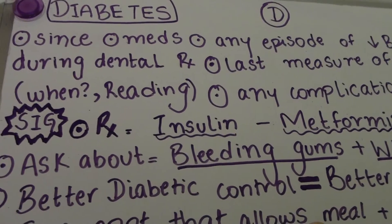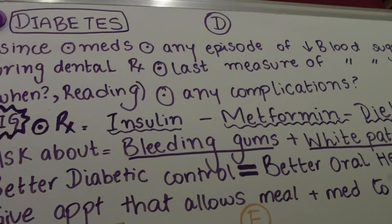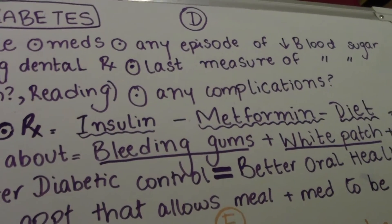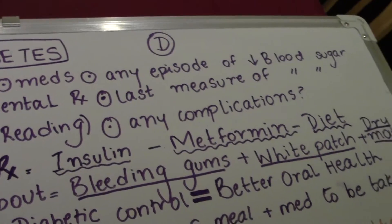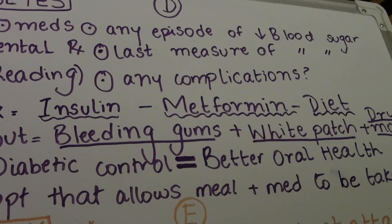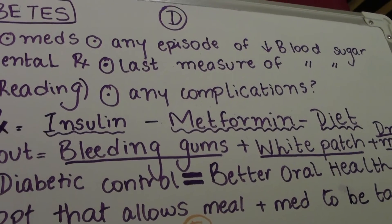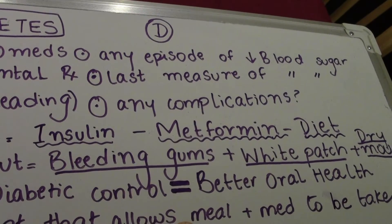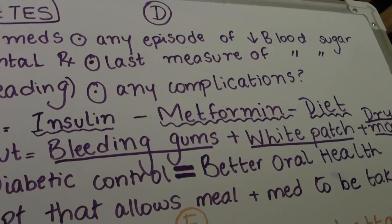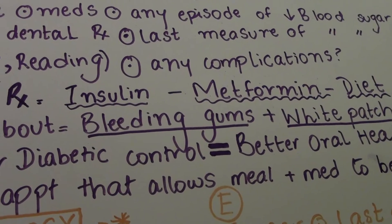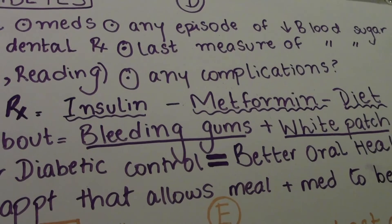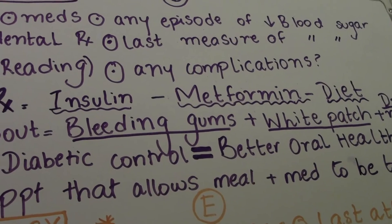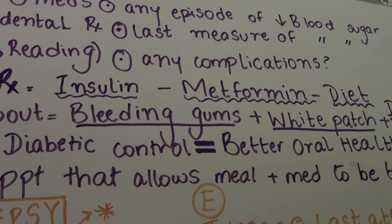The treatment they could be undergoing includes insulin, metformin, or dietary control — some patients are just on diet alone. With insulin, we know there's an increased risk of the patient becoming hypoglycemic during dental treatment. With metformin and diet, we want to make sure the patient is aware of the symptoms and oral signs associated with diabetes.